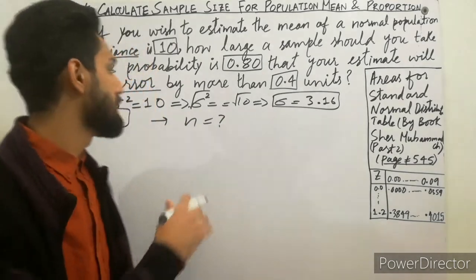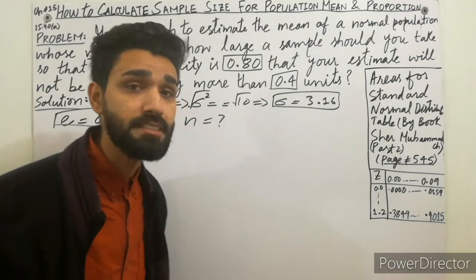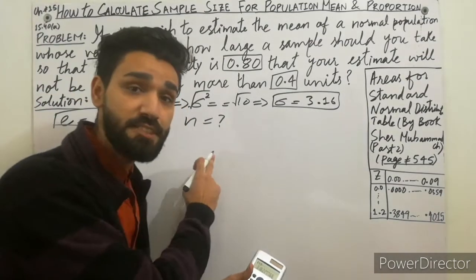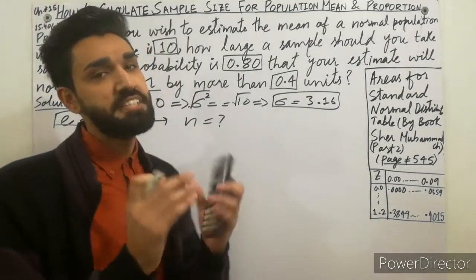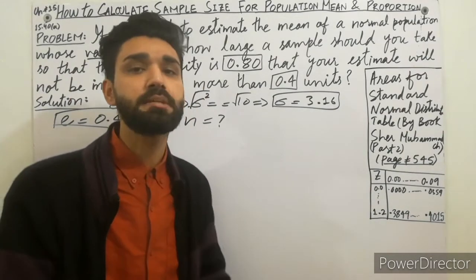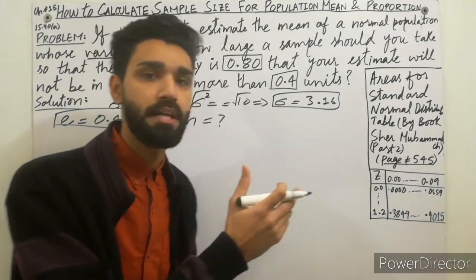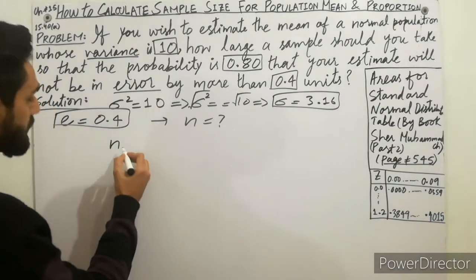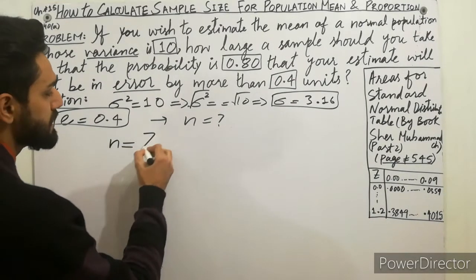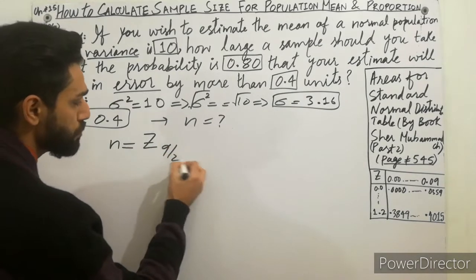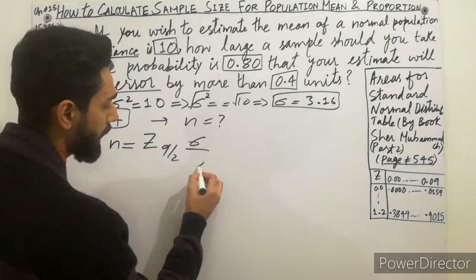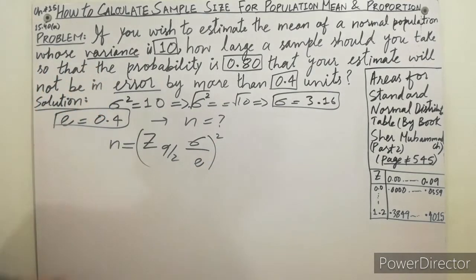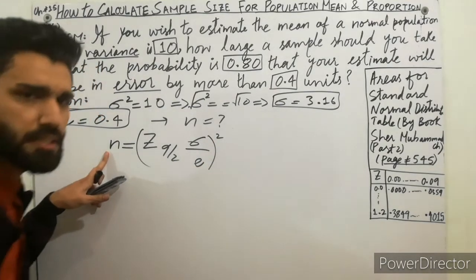You have to calculate the sample size. I have already discussed the formula in my last lecture, which is available in the description. The formula is very simple: n is equal to z alpha by 2 times sigma divided by e, all completing the square. This formula will be used to calculate the sample size.